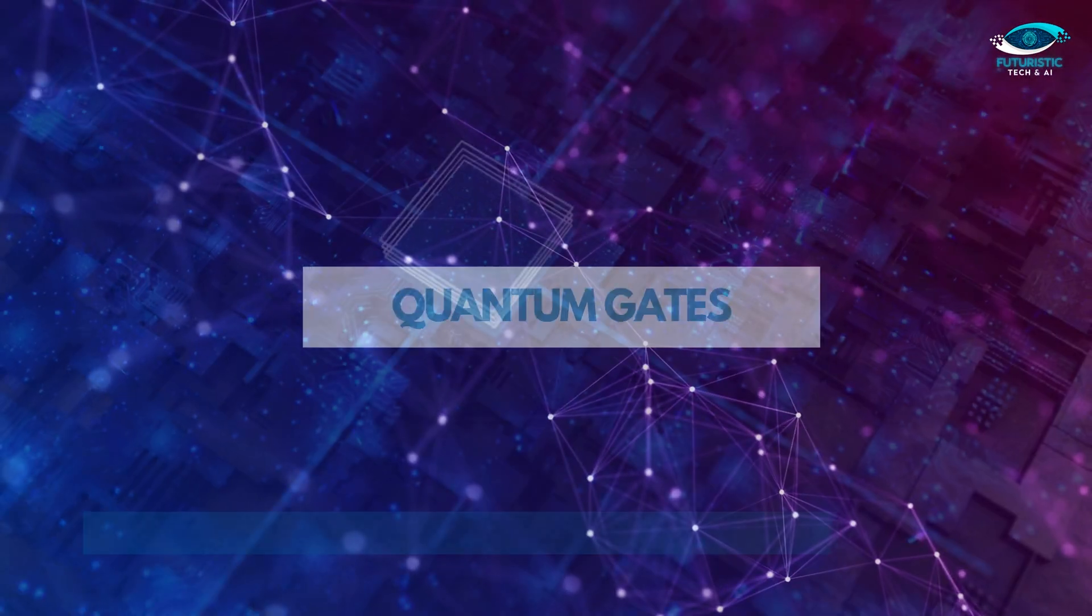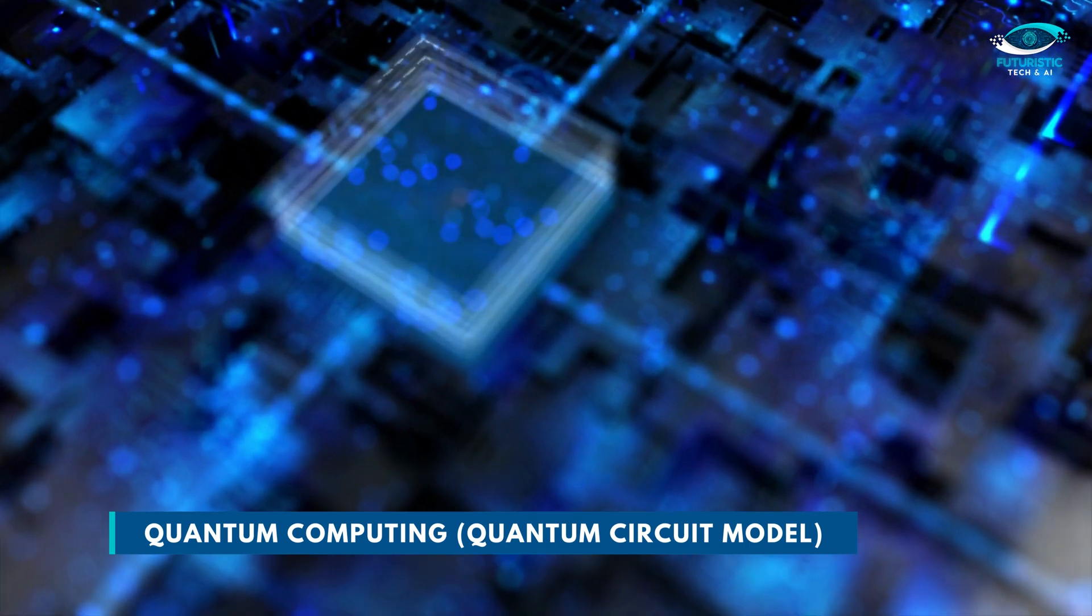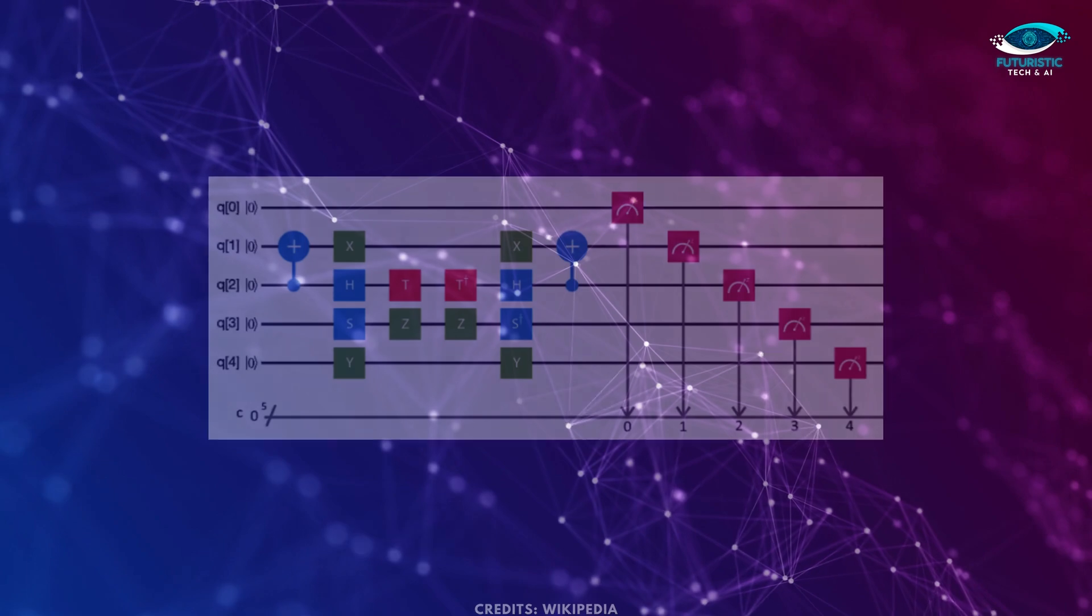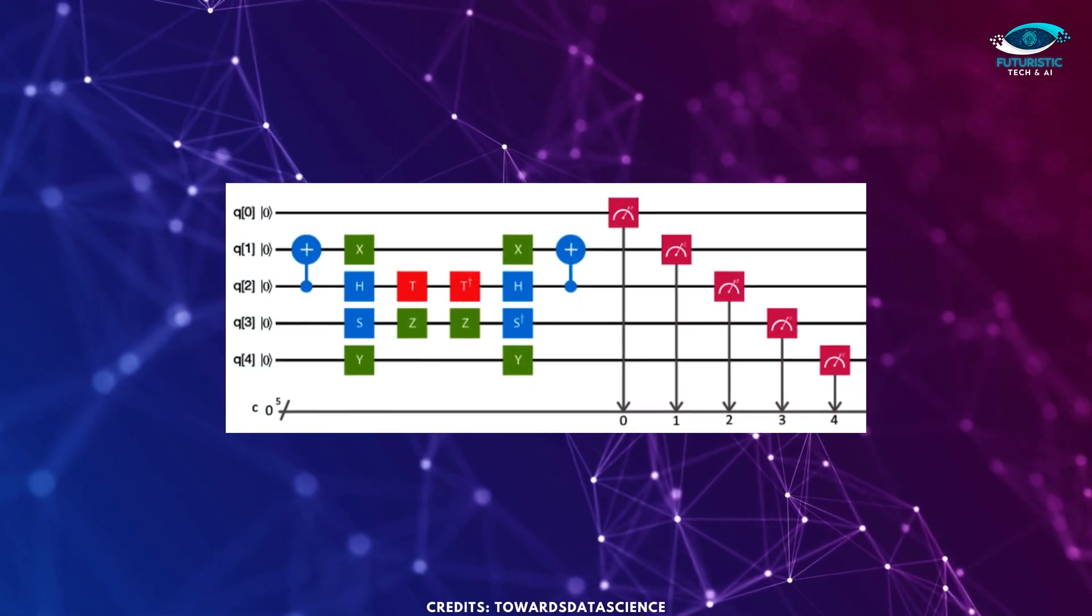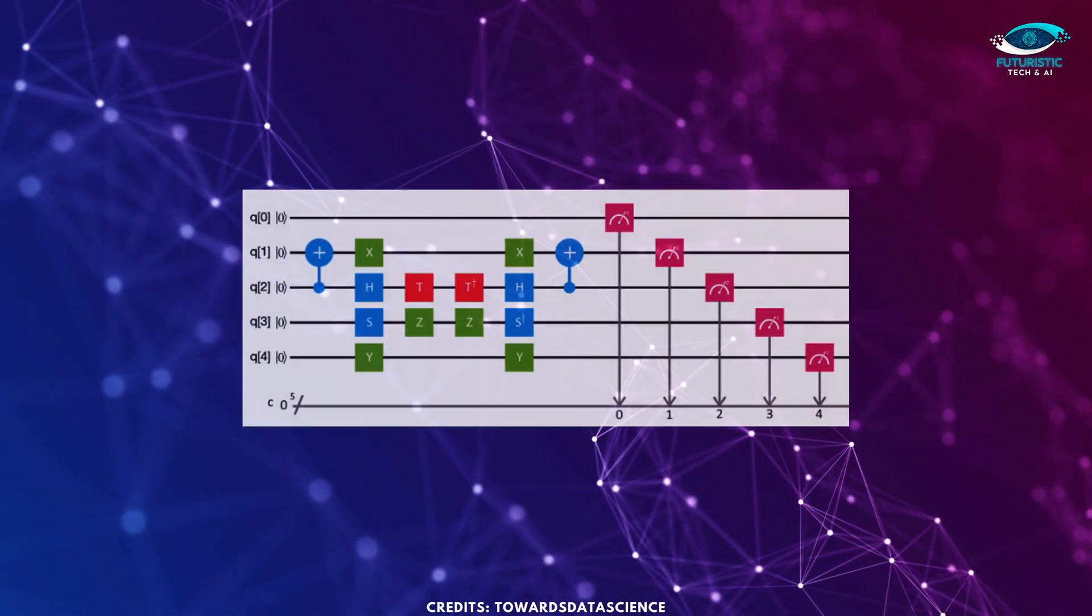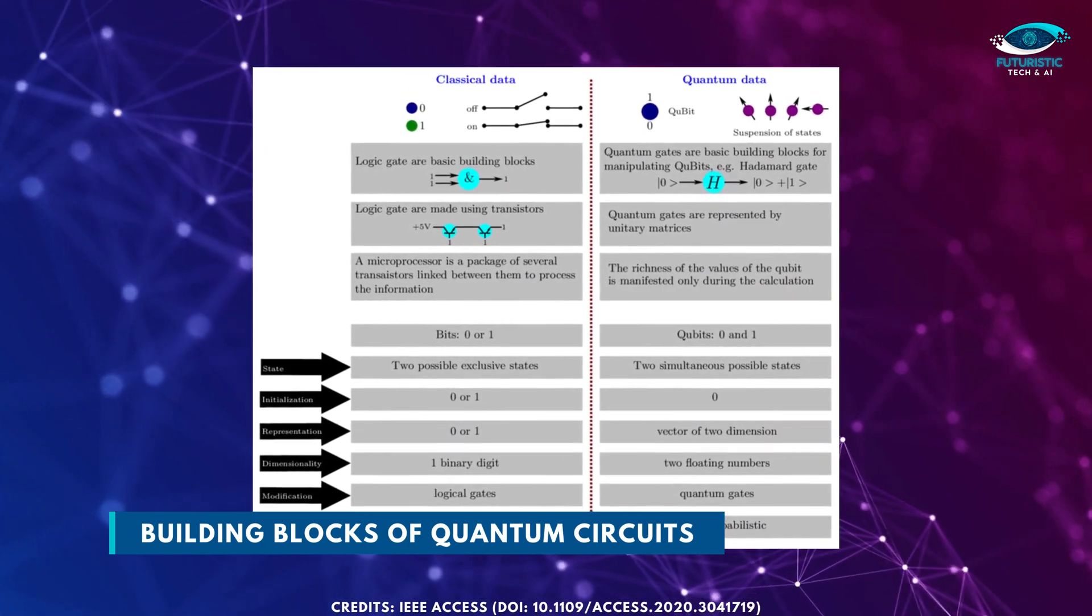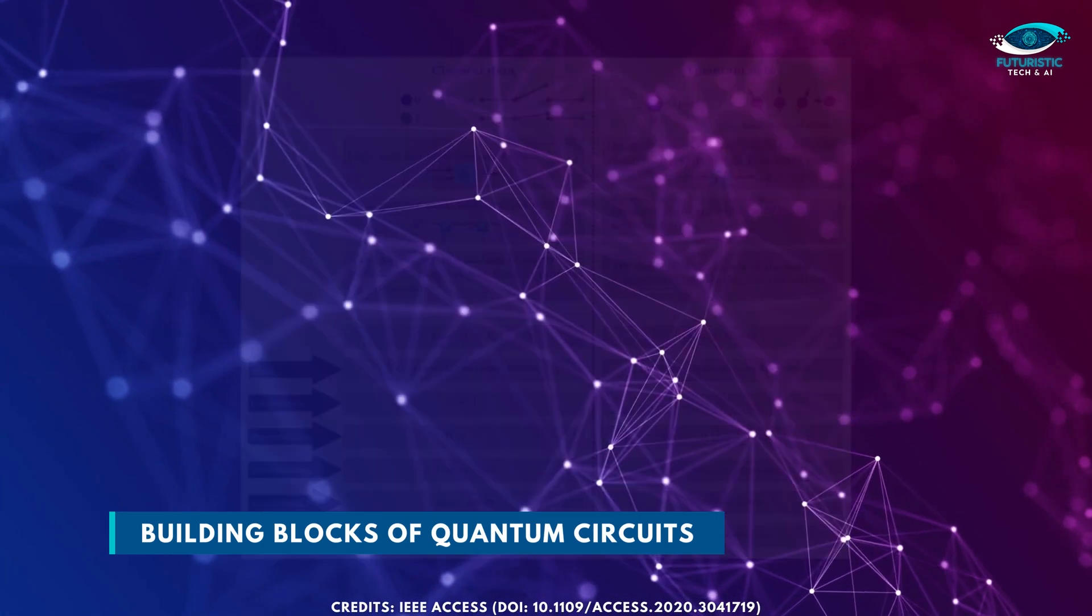Quantum gates. In quantum computing, and specifically the quantum circuit model of computation, a quantum logic gate, or simply quantum gate, is a basic quantum circuit operating on a small number of qubits. They are the building blocks of quantum circuits, like classical logic gates are for conventional digital circuits.